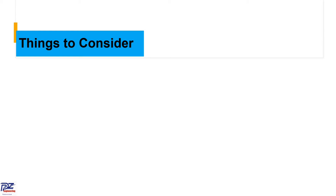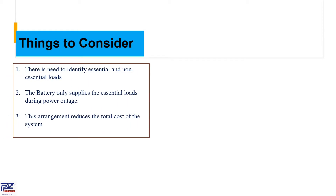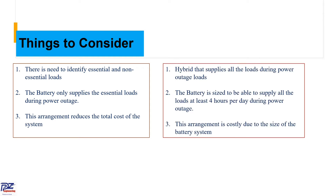Things to consider when designing our AC coupled system: there is a need to identify the essential and non-essential loads. The battery only supplies the essential loads during a power outage, and this arrangement reduces the total cost of the system. The second arrangement is where the battery supplies all the loads during a power outage. The battery is sized to supply all the load for at least four hours per day during the power outage.